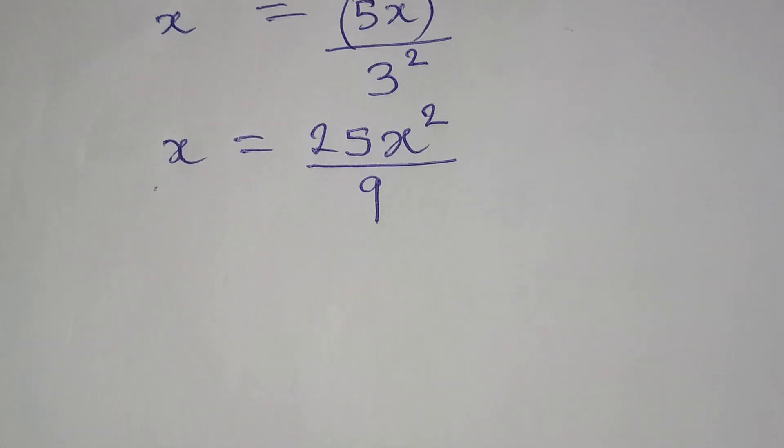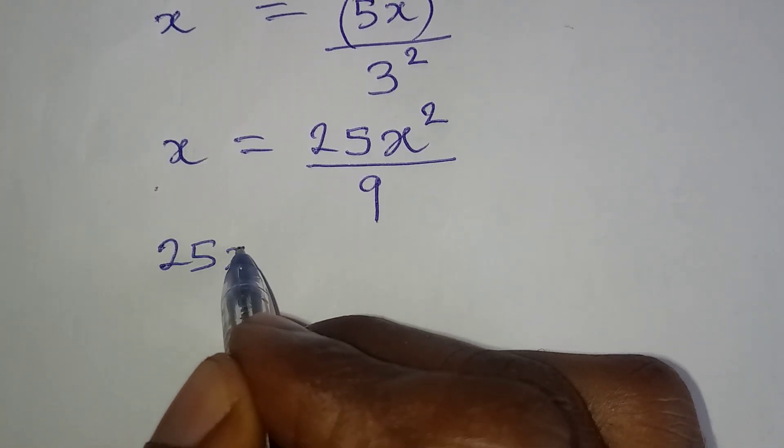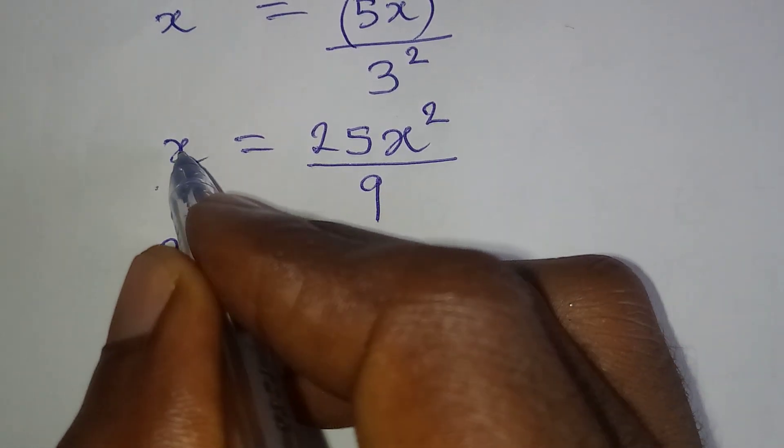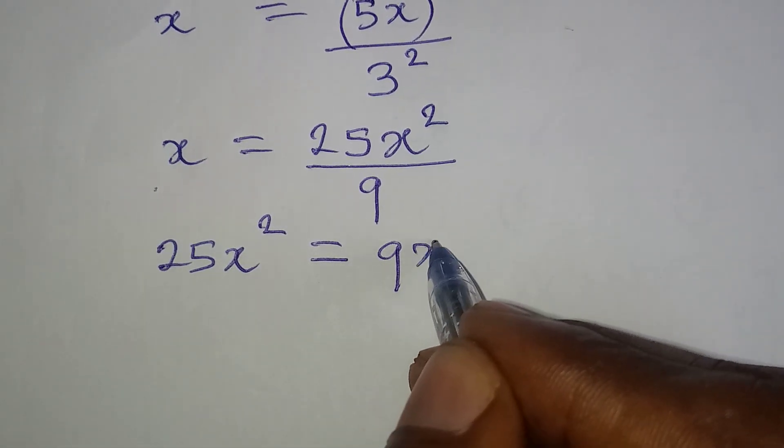Now, the next thing I'm going to do is to cross multiply and then 25x squared will be on its own. And it will be equal to 9 times x, which is 9x.